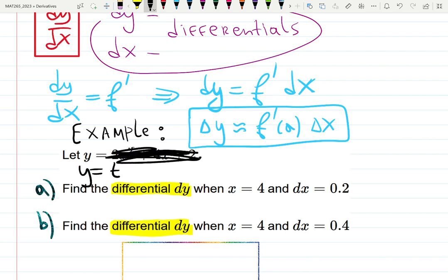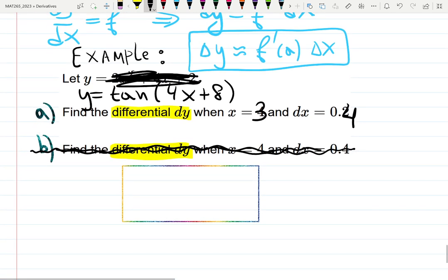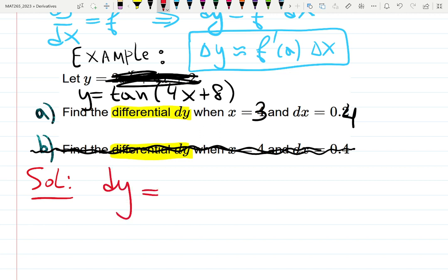So, this problem is already solved in the video. That's why I don't want to repeat it. I will do y equals tangent. Because I saw in the office hours people stuck with tangent a little bit. Find differential dy when x is 3 and dx is 0.4. And we're not going to do the second one because it's literally the same thing. Why repeat?